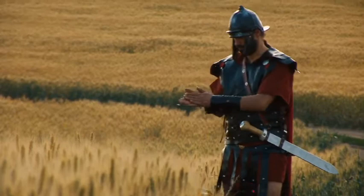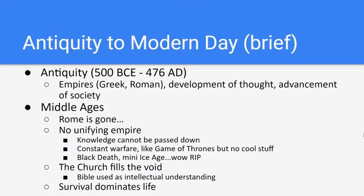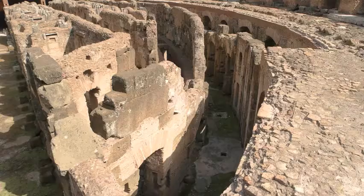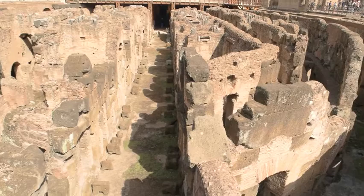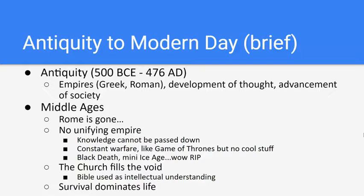This era of antiquity was full of thought, process, and development. Then something really important happens in 476 AD — Rome falls officially, the empire is gone. And from 476 AD to almost 1800, we have almost nothing to show for the timeline of the modern-day atom, because we enter the Middle Ages.